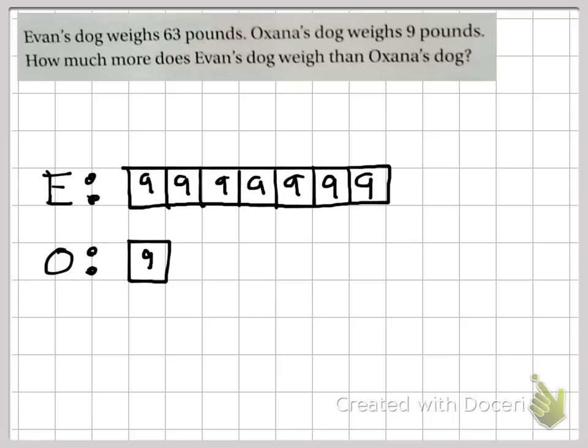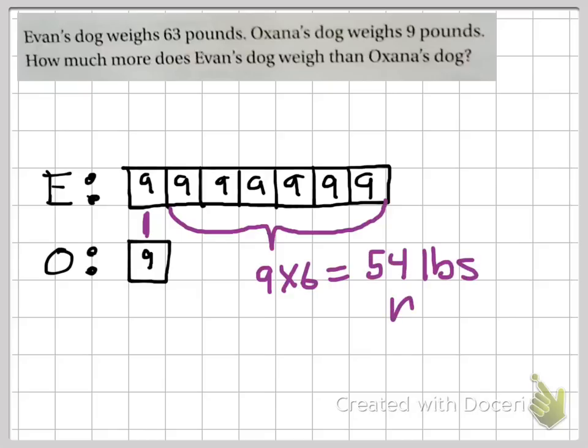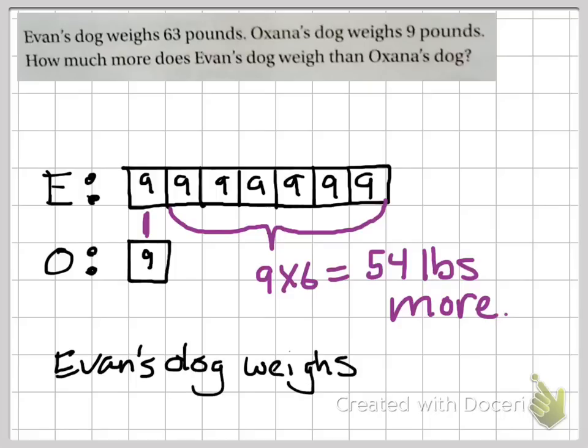But we want to see in the model where the difference is. The difference is right in here, the copies that aren't the same. These two are the same. They're both at least nine pounds. Evan's dog is nine times six more, which is 54 pounds more. A correct response statement would be Evan's dog weighs 54 pounds more than Ohana's dog.